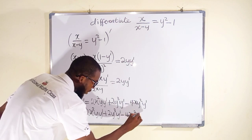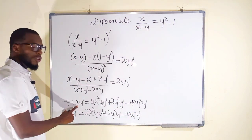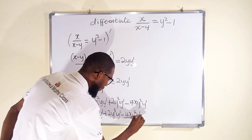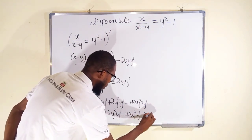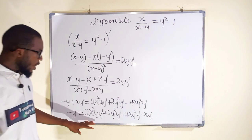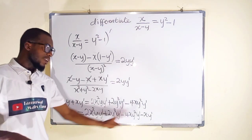If you take this one to the right it becomes negative. We have negative xy prime. So we are going to factor out y prime in this expression.